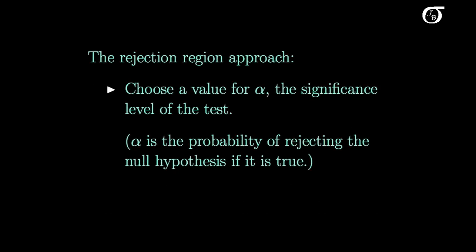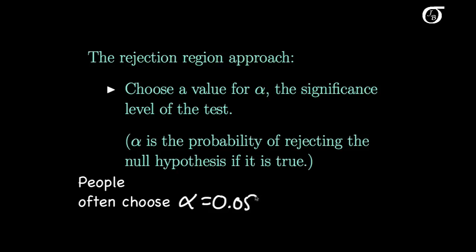The rejection region approach involves choosing a value for alpha, which we call the significance level of the test. Alpha is the probability of rejecting the null hypothesis if it is true. I'll discuss that in much more detail when I cover type 1 and type 2 errors in another video. The appropriate choice of alpha depends on the problem at hand, but often people choose alpha to be 0.05.